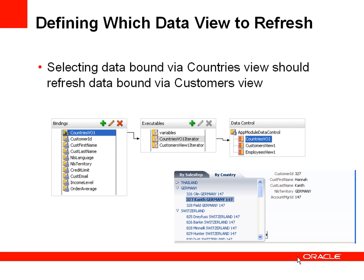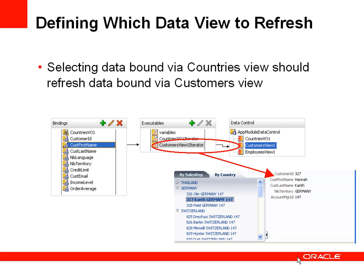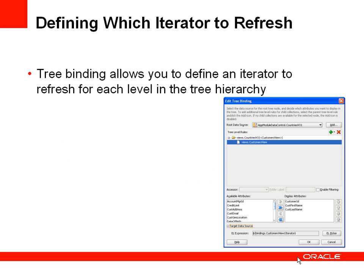Behind the scenes, when a country is selected and a particular customer in that country is selected, we want to force the iterator associated with the customer view to be refreshed. ADF gives us a feature for the tree control where for each node you can define an EL expression pointing to an iterator in the binding that should be refreshed whenever you select that node. So selecting the customers node within the employees or sales rep view will force the refresh of another iterator within that binding.